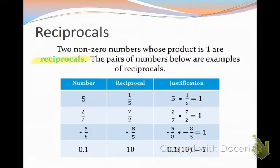Two non-zero numbers whose product is one are called reciprocals. In the blue chart underneath, we see some examples of that. For example, the number 5, if I flip that fraction, I know it can be 5 over 1. I flip it to 1 over 5, and yes, if I multiply 5 times 1 fifth, my answer is 1.